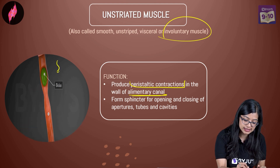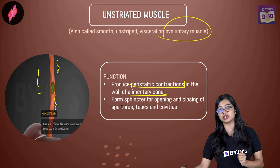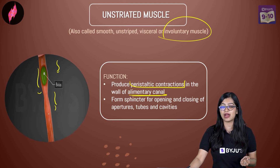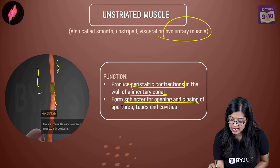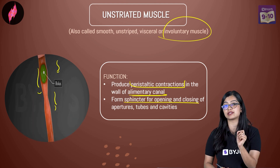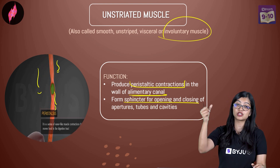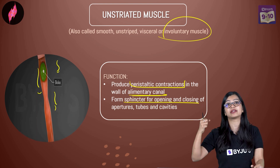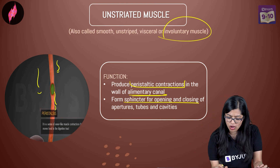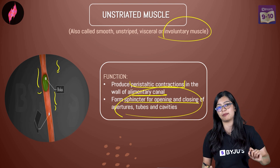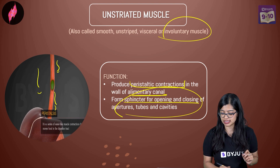Since smooth muscles make up the alimentary canal and walls of blood vessels, their movement cannot be controlled. They are responsible for involuntary movements such as the peristaltic contractions and relaxations we see in the alimentary canal — the wave-like movement brought about by smooth muscles. They also regulate the opening and closing of sphincters found in the stomach and urinary bladder.